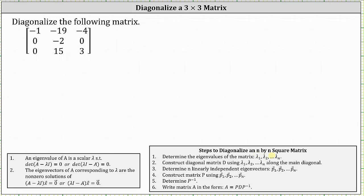Number two, we construct the diagonal matrix D using the eigenvalues along the main diagonal; all other entries are zero. Number three, we determine n linearly independent eigenvectors, which in our case will be the vectors p sub one through p sub three.